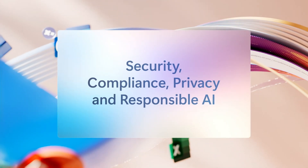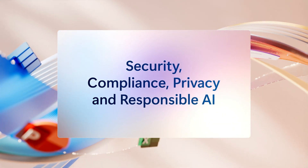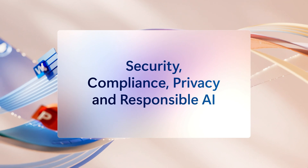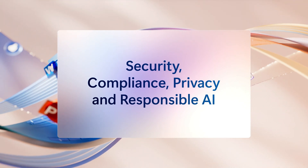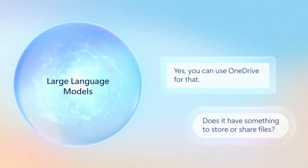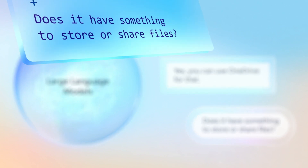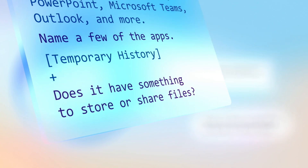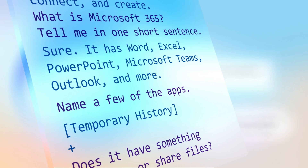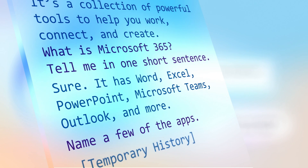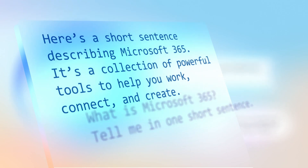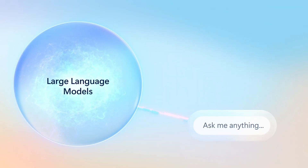Importantly, Microsoft 365 Copilot only uses information that you explicitly have access to. It only remembers your conversation while it's in that conversation, and we don't use your information to train the large language model. The chat history is in fact wiped clean with each new conversation.